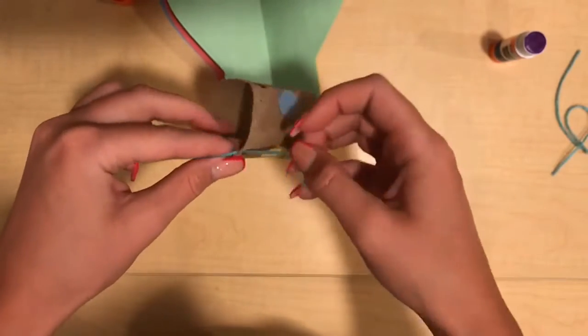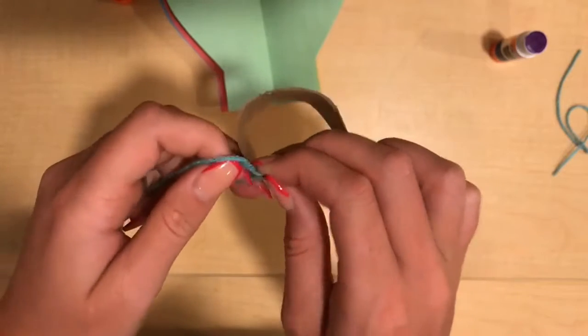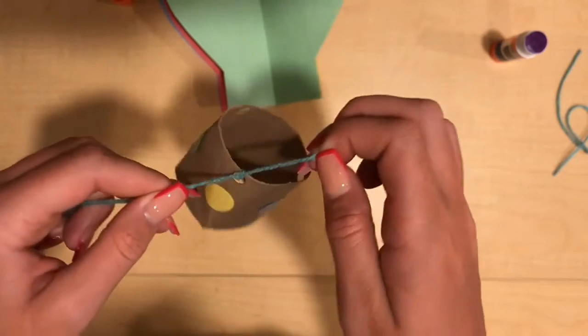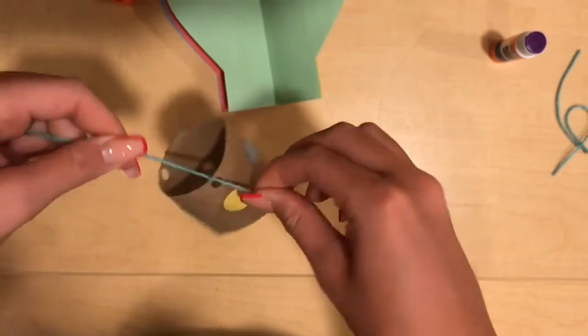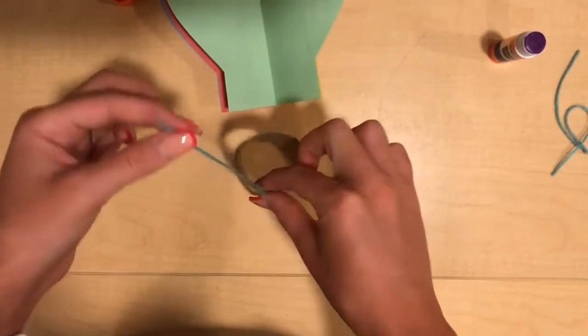And this will eventually attach to the main portion of the hot air balloon. There are three pre-cut holes on the toilet paper roll, so after you have tied each piece of yarn through each hole, we will move on to the next step.